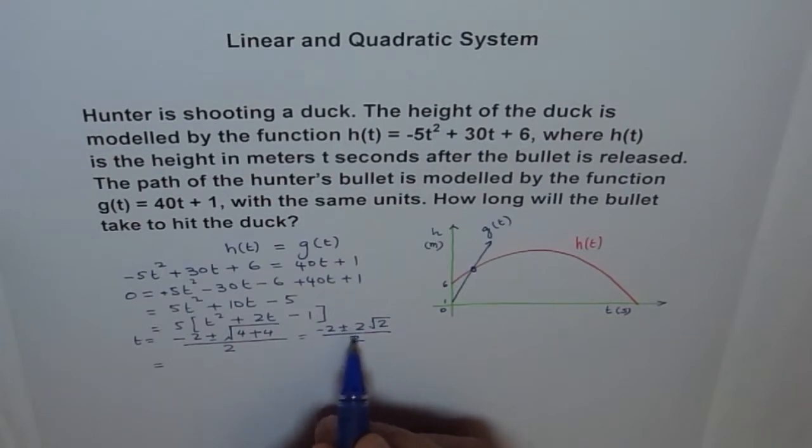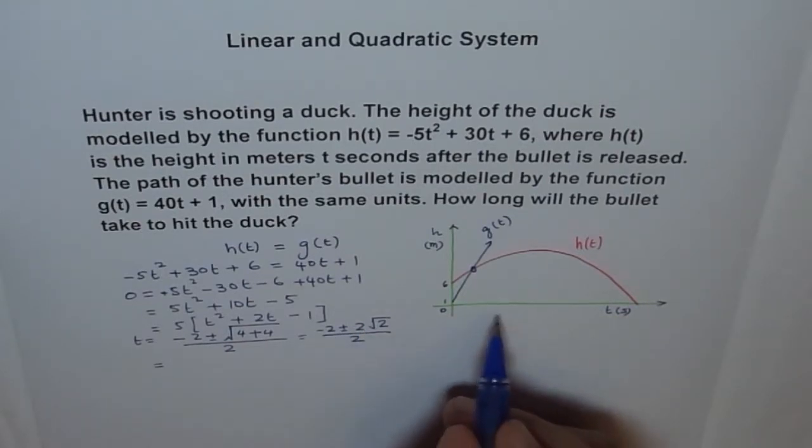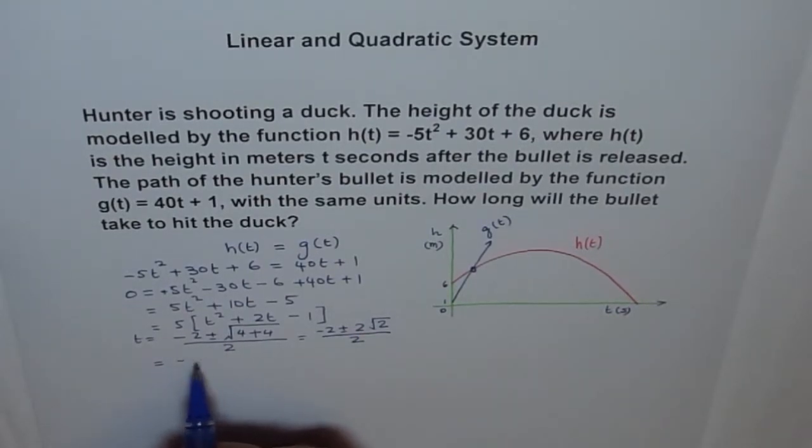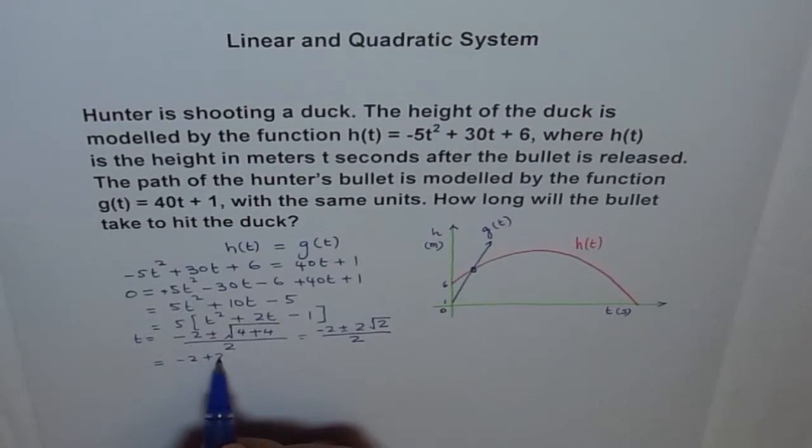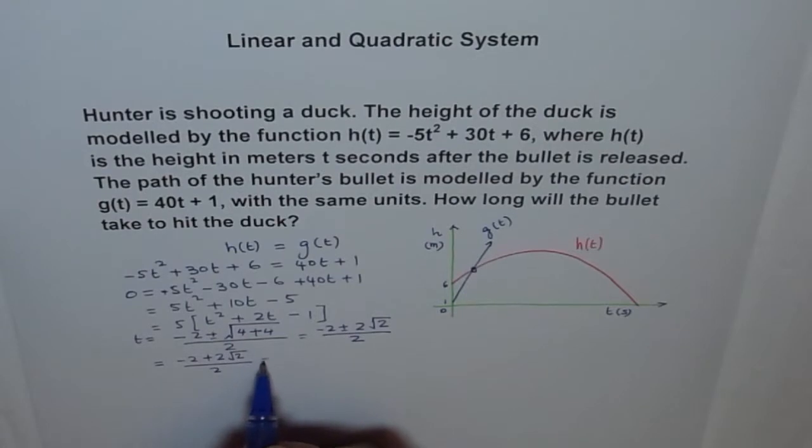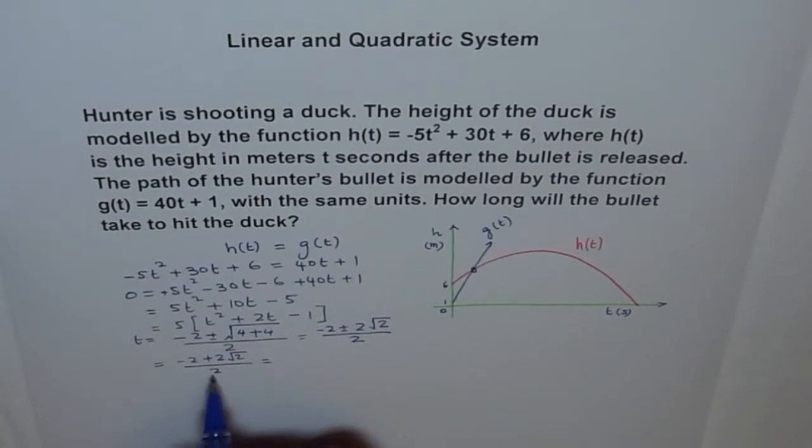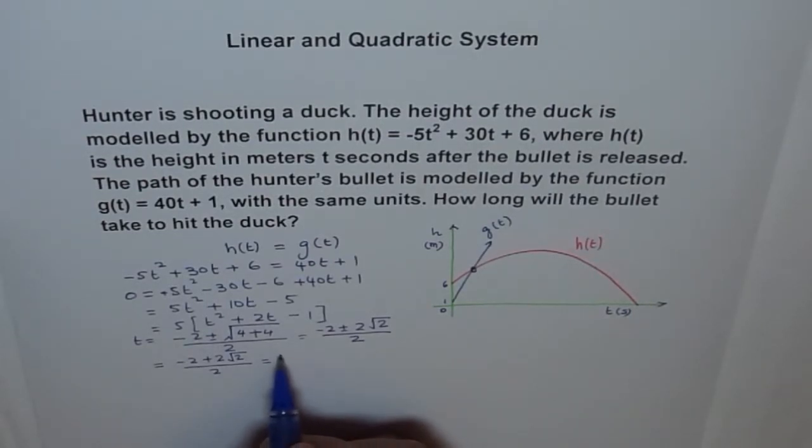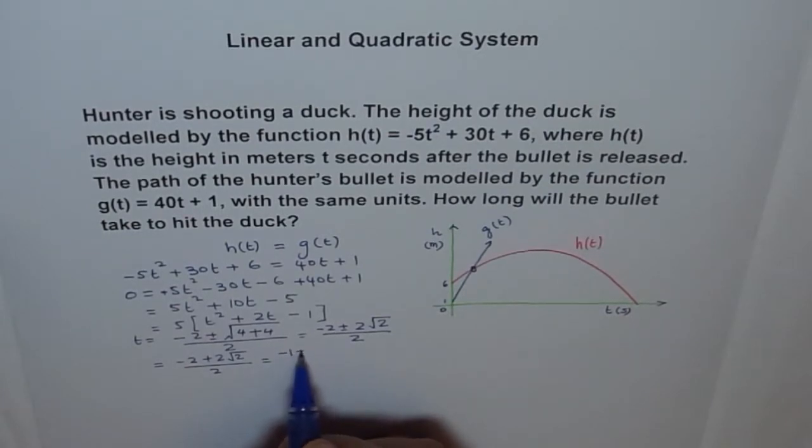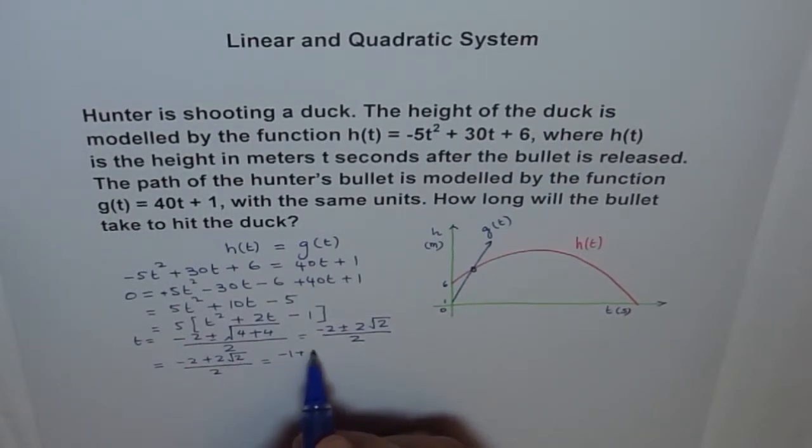So we have -2 plus 2√2. This is the valid answer, divide by 2. And when I divide by 2, I get, here it is -2. We can take 2 common. Well, we can divide. -1 + √2. Is that okay?